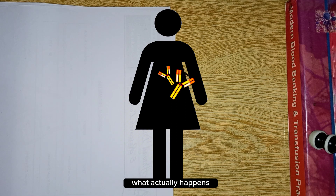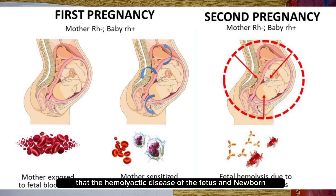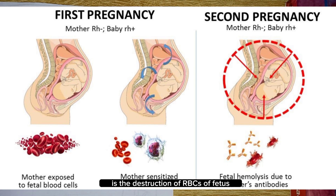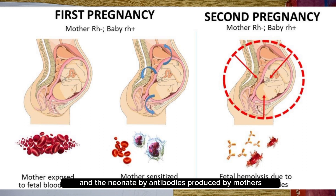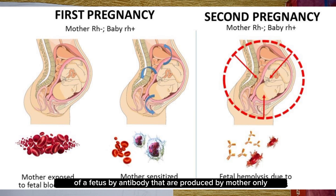The hemolytic disease of the fetus and newborn is the destruction of RBCs of the fetus and neonate by antibodies produced by the mother. HDN is caused by the destruction of fetal RBCs by antibodies produced by the mother.